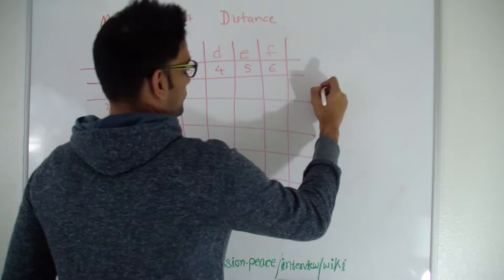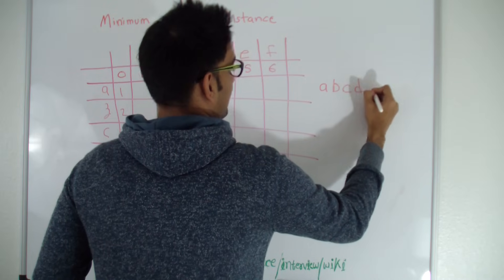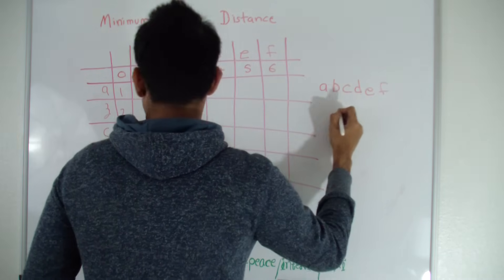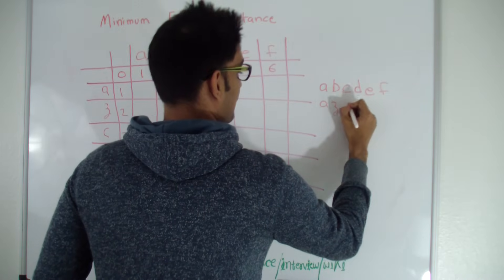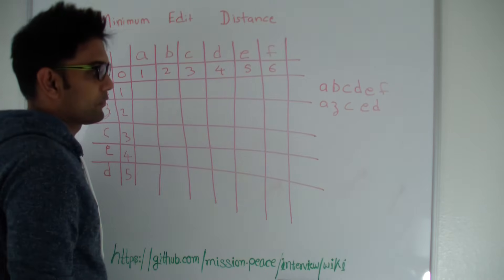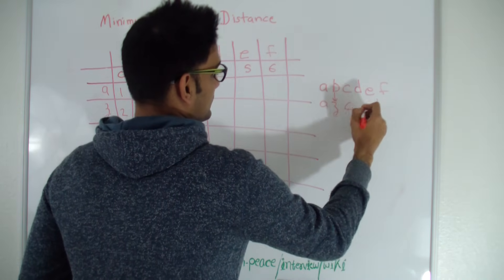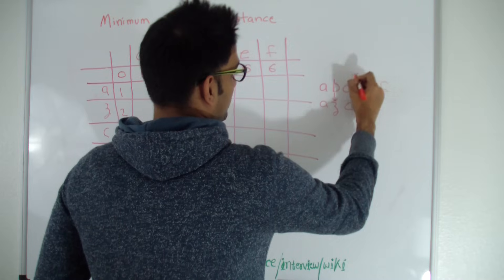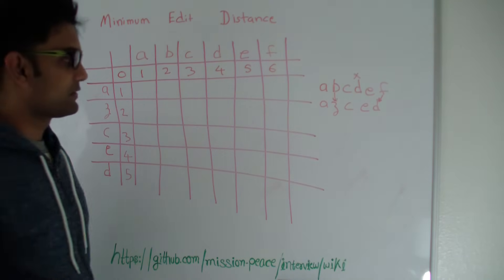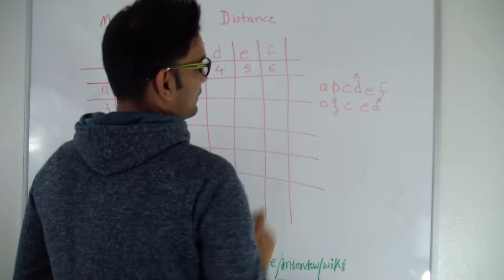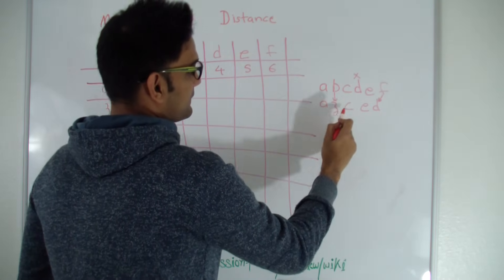Let me write those strings here. In this case, A and A is the same, B can be converted to Z, C and C is the same, D can be deleted, E and E is the same, and F can be converted to D. So it would take three operations — two edits and one delete — to convert the string ABCDEF to string AZCED.